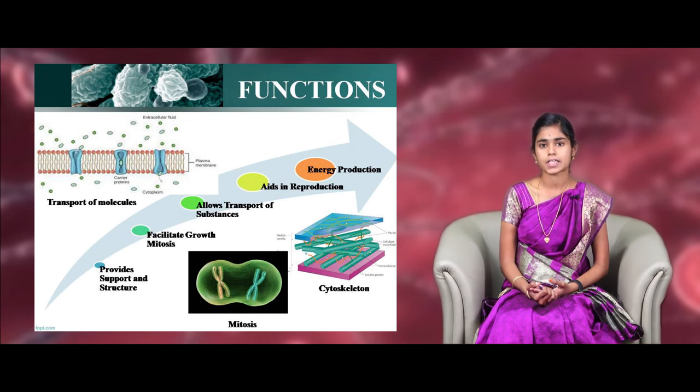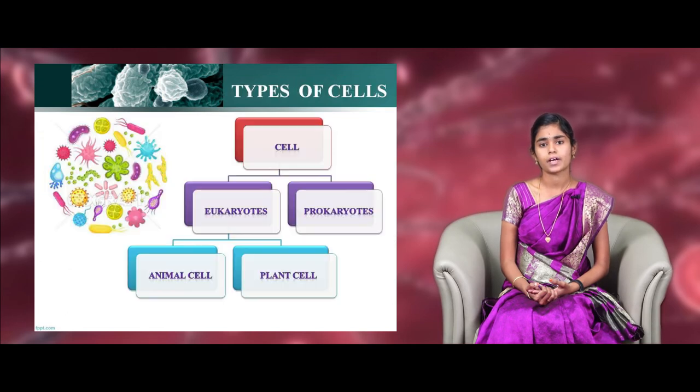And fourth one, it allows the transport of substances. In the case of waste materials, the waste materials has to be eliminated out of the cells. And in the nutrients engulfing, the nutrients has to move into the cells. Finally, it has to produce the energy. In the plants, it produces the energy in the process of photosynthesis. And in animals, it produces energy in the form of respiration.